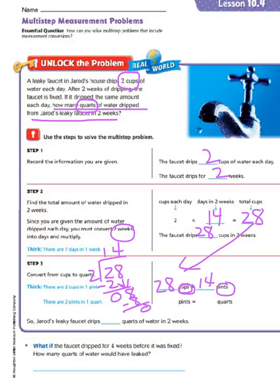Now we have to do our second step, because now we have to take it from pints to quarts. So we have our 14 pints, and we are going to divide by 2 pints in one quart. So we take our 14, divide it by 2, because we divide by our smallest unit, which is our pints. And we divide because we are going from our smallest to bigger unit. 14 divided by 2 equals 7, so that would be 7 quarts. So Jared's leaky faucet drips 7 quarts of water in 2 weeks.